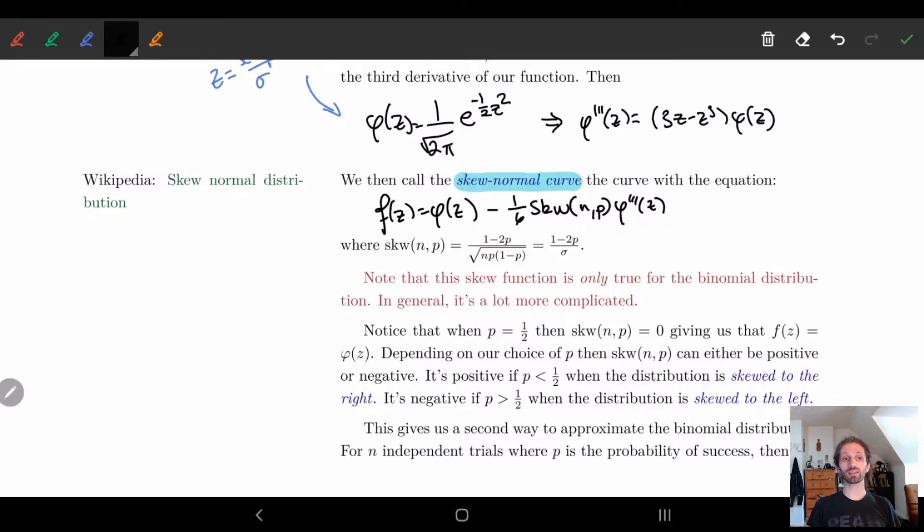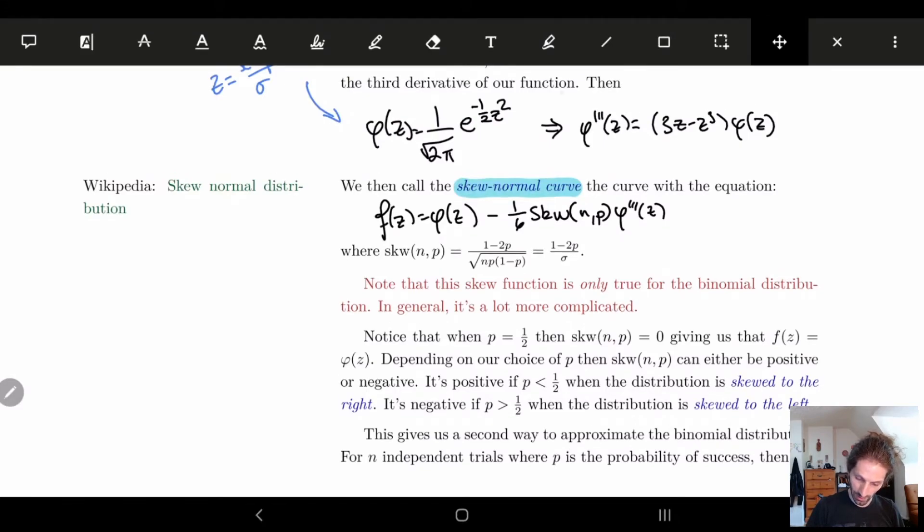So we get 1 divided by 6 times skewness of (n,p) and the third derivative of φ. So this skewness of (n,p) is given by this little formula here. I wrote it down in the thing.